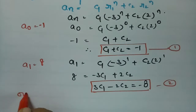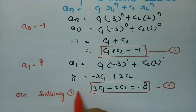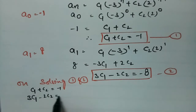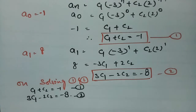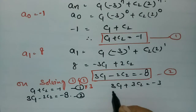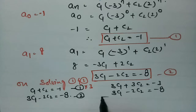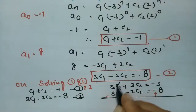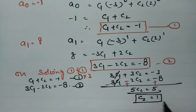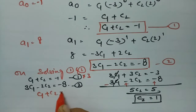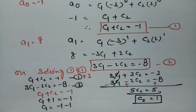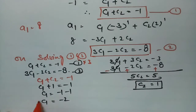On solving equations 1 and 2: Equation 1 is C1 + C2 = -1, and equation 2 is -3C1 - 2C2 = -8. Multiplying equation 1 by 3 gives 3C1 + 3C2 = -3. Subtracting equation 2 from this: 3C1 cancels, leaving 5C2 = 5, so C2 = 1. Substituting back into equation 1: C1 + 1 = -1, so C1 = -2.